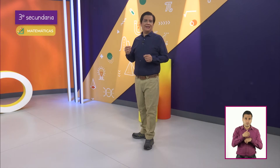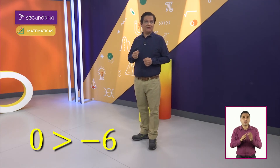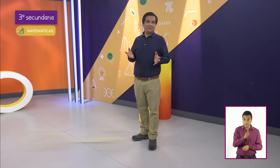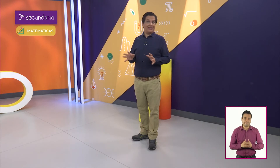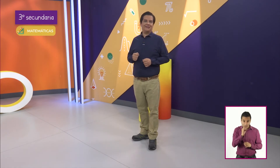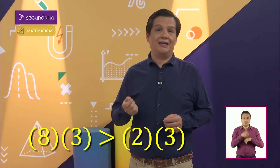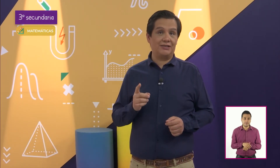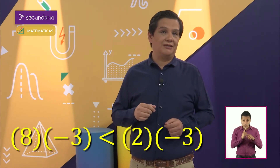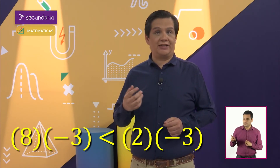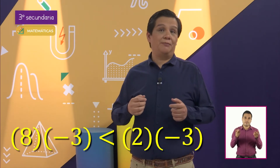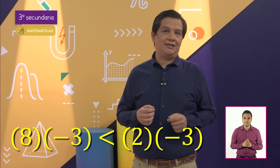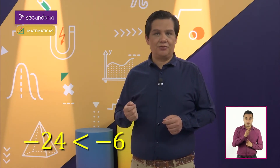Pero, ¿cómo es posible que el 0 sea mayor? Ustedes ya saben que en las relaciones de orden, el 0 se sitúa a la derecha del -6, por lo que es mayor. Expresado de otro modo, es una cantidad mayor no tener nada, o 0, que tener un faltante de 6. Si esta misma relación se multiplica por un número positivo, también se mantiene la relación de orden: 8 por 3 es mayor a 2 por 3. Pero si la multiplicación es con un número negativo, la relación de orden cambia. Por ejemplo, al multiplicar 8 por -3, se obtiene -24. Y al multiplicar 2 por -3, se obtiene -6, teniendo que -24 es menor que -6.